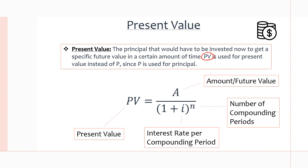If we take a look at the present value equation at the bottom, present value equals the amount or future value — the amount we have after a certain period of time — all over one plus the interest rate per compounding period. We need to be careful for the compounding period type, because we could be compounding annually, quarterly, monthly, or other types, so we need to divide the interest rate appropriately.